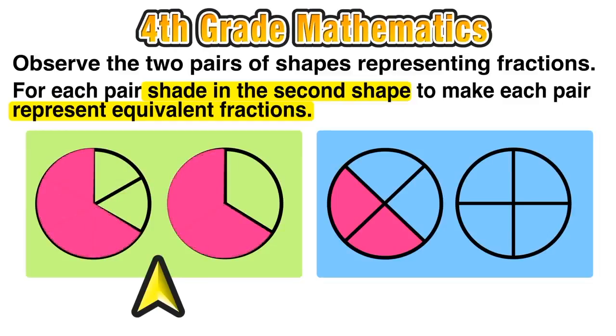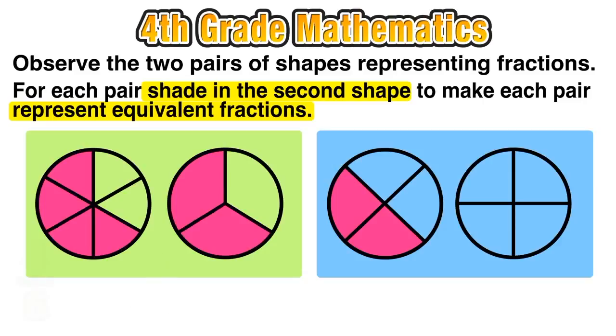Again, we see that they are equivalent in how much they are shaded in. So our first diagram represented four of six, and our second was two of three. And we can say that four over six and two over three are equivalent fractions.